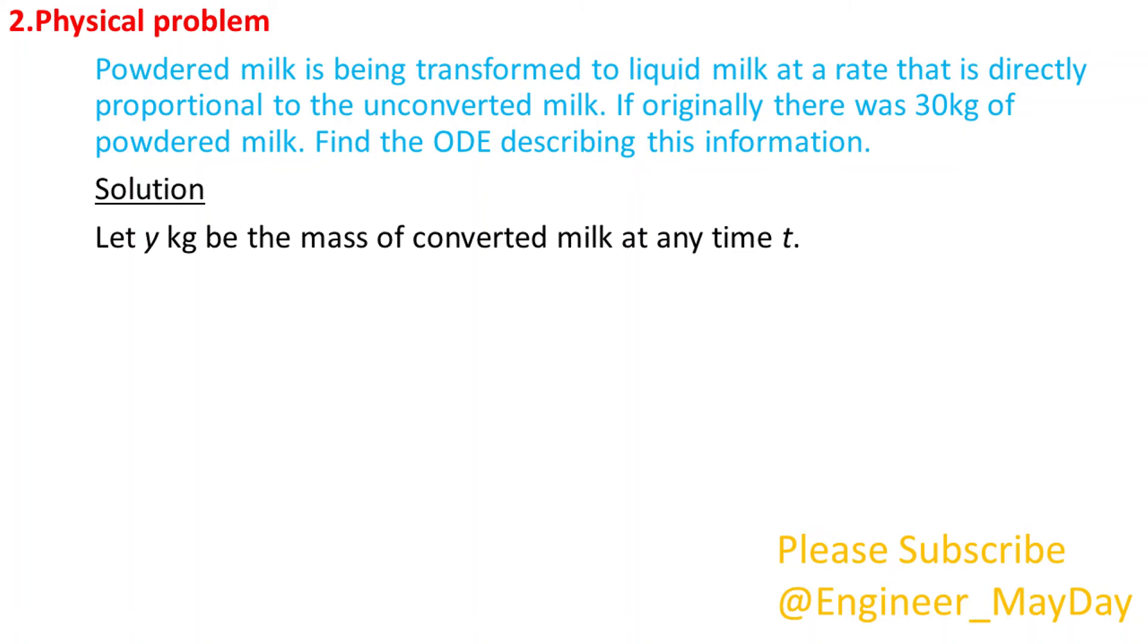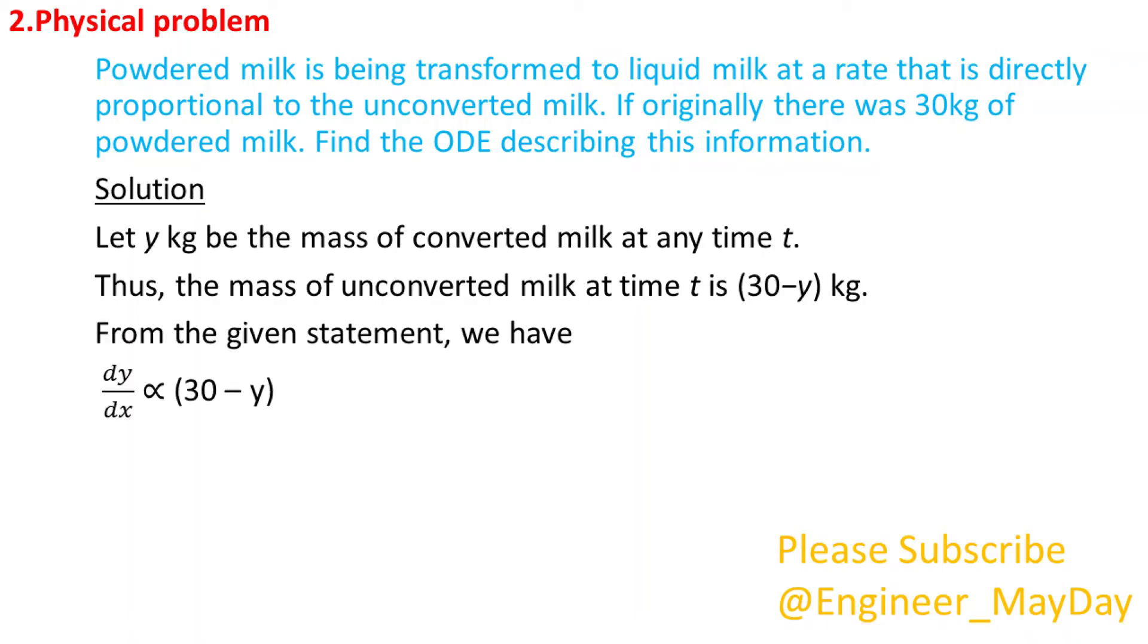Solution. Let y kilograms be the mass of converted milk at any time t. Thus, the mass of unconverted milk at time t is 30 minus y kilograms. From the given statement, we have dy over dx is proportional to 30 minus y. dy over dx equals k into 30 minus y, where k is a constant of proportionality.